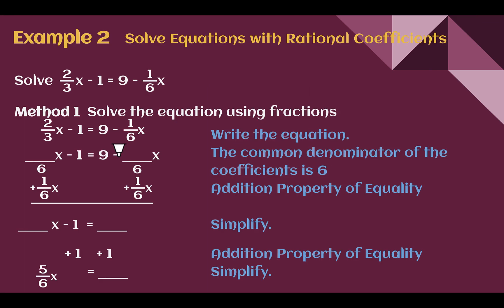Example 2: Solve equations with rational coefficients. Solve 2/3x minus 1 equals 9 minus 1/6x. There are two methods we'll go through: one calculating with fractions directly, and the second by eliminating the fractions. First, let's use our operations with fractions. Because these have different denominators, we need a common denominator. 2/3 is the same as 4/6, and negative 1/6 already has a denominator of 6.